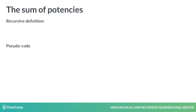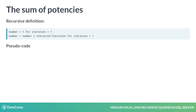The next problem is the sum of potences. As in the previous example, the number for the first iteration is initialized with 1. For the next steps, you calculate the number of the iteration with the power of the iteration and add this value to the previous number. You do this until the termination condition is met.